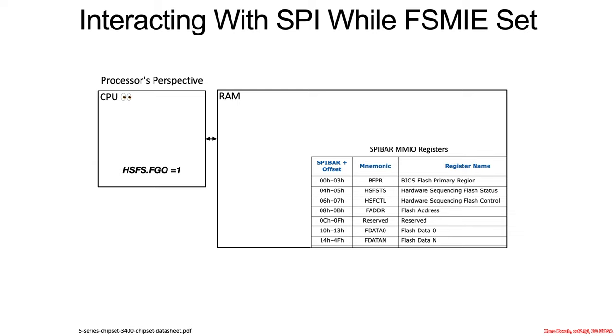Code running in SMM — which could be malware — will have the first opportunity to look at the contents of the flash registers and fix them up if there's something it doesn't like. Going back to the animation of writing to the flash chip, we now assume that FSMIE is set and that malware exists in SMM.